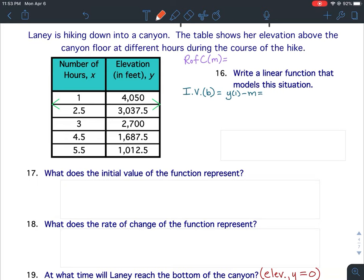Laney is hiking down into a canyon. The table shows her elevation above the canyon floor at different hours during the course of the hike. For question 16, they want us to write a linear function that models the situation.